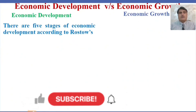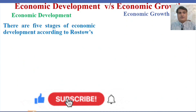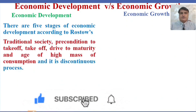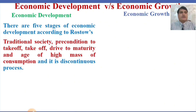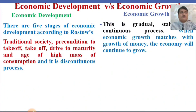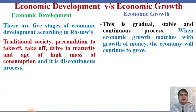There are five stages of economic development according to Rostow: traditional society, precondition to takeoff, takeoff, drive to maturity, and age of high mass consumption. Economic development is a discontinuous process, whereas economic growth is a gradual, stable, and continuous process.